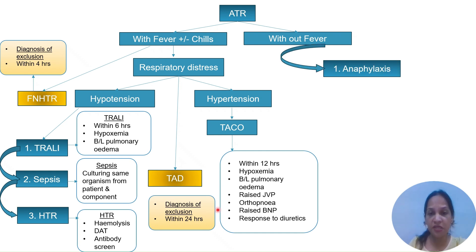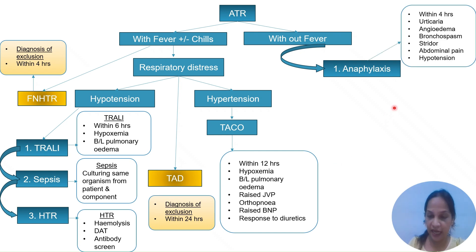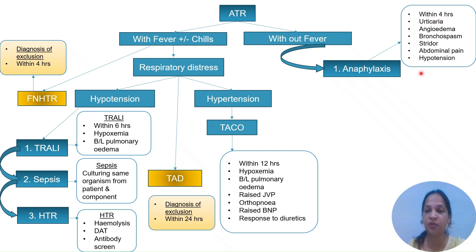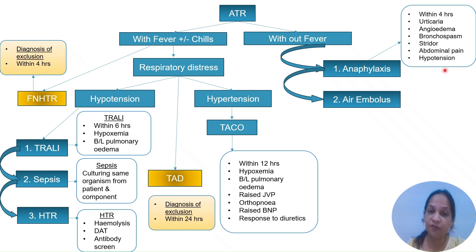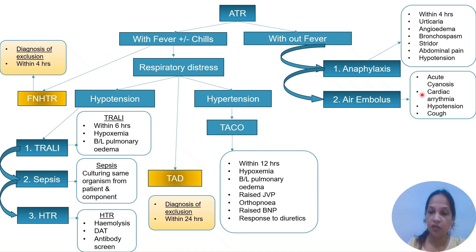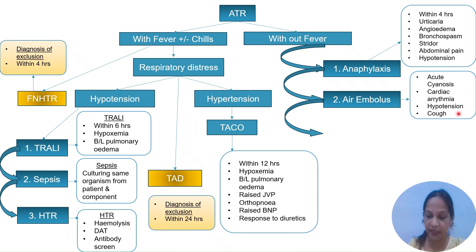If there is an acute transfusion reaction without fever, it can be anaphylaxis — presenting with urticaria, angioedema, bronchospasm, stridor, abdominal pain, and possibly hypotension, with signs and symptoms within four hours but no fever. Another possibility without fever is air embolus, which presents with acute onset of cyanosis, cardiac arrhythmia, hypotension, and cough.